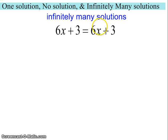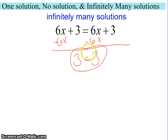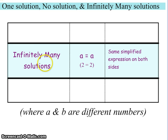We're going to start by looking to distribute — we don't have to. Collect like terms — we don't have to. So now we get the variables on the same side: minus 6x and minus 6x. 6 minus 6 is nothing, so we're left with 3 on the left. 6 minus 6 is nothing, so we're left with 3 on the right. So we do still have a true statement — 3 is the same as 3. And what that means is that no matter what number is plugged in, this statement is true. With infinitely many solutions, we're going to see a result of a number equaling itself.